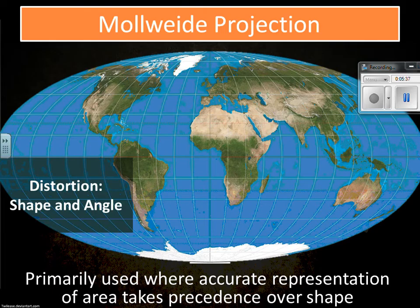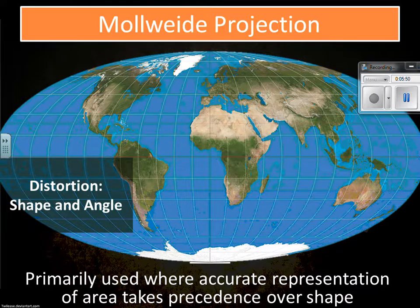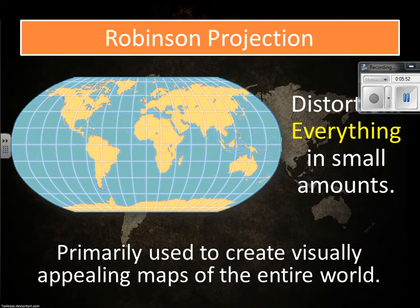The Mollweide projection distorts shape and angle, so you're going to have an accurate representation of the area, but the shape is a little bit distorted. Robinson is also a fairly famous one — it distorts everything, but just a little bit: size, shape, and distance are all distorted. It seems to be one that people like the look of quite a bit; it's visually appealing, so you'll see it often.